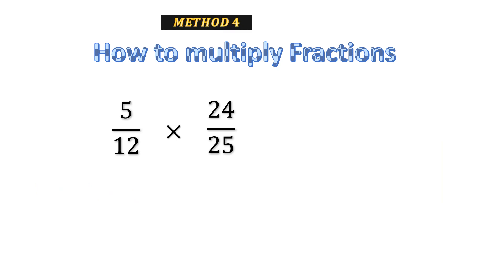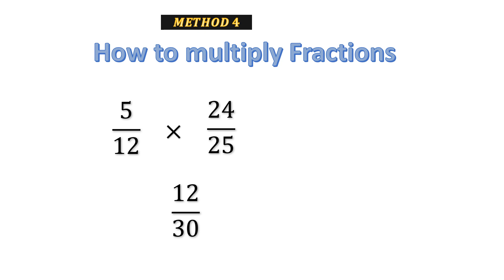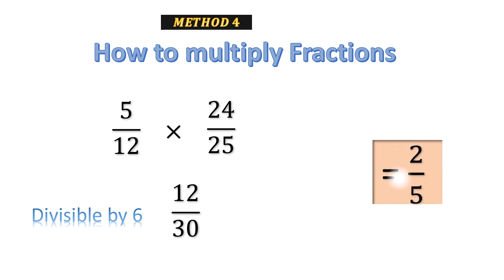Method 4. Let's do the same thing with a shortcut. We multiply numerator with numerator and denominator with denominator directly — we already know the answer is 120 over 300. Instead of dividing by 10, we notice there is one zero in the numerator and one zero in the denominator, so we simply strike one zero with the other zero. Striking the zeros gives us 12 over 30. Both 12 and 30 are divisible by 6: 6 times 2 is 12 and 6 times 5 is 30. Striking them gives us 2 and 5, so the answer is 2 over 5.